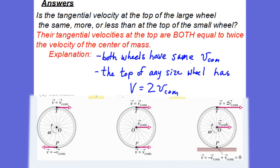To answer this, we note that for any size wheel, the tangential velocity at the top is equal to twice the velocity of the center of mass. For this bicycle, both wheels are moving across the ground at the same speed — so they both have the same VCOM, and therefore both have the same tangential velocity at the top of the wheel.